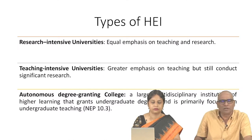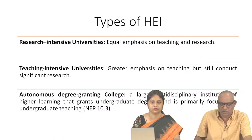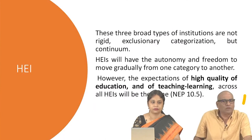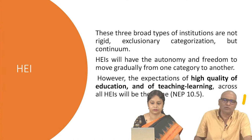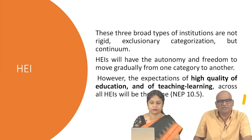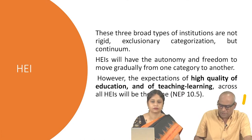Recently, UGC has come up with guidelines where all colleges would be degree-granting, and in due course they would either become part of university clusters or become universities. Ultimately, the policy aims that every district or near every district there would be a university. This is a great opportunity for colleges to design how they want to plan their institution through an institutional development plan. This classification is not rigid — it is a continuum. A teaching-intensive university can become research-intensive. They have the autonomy and freedom.